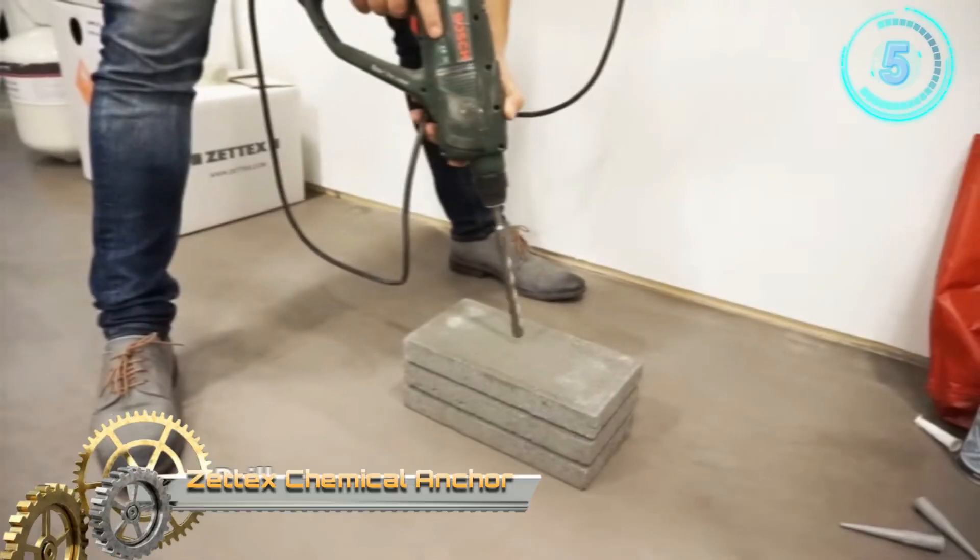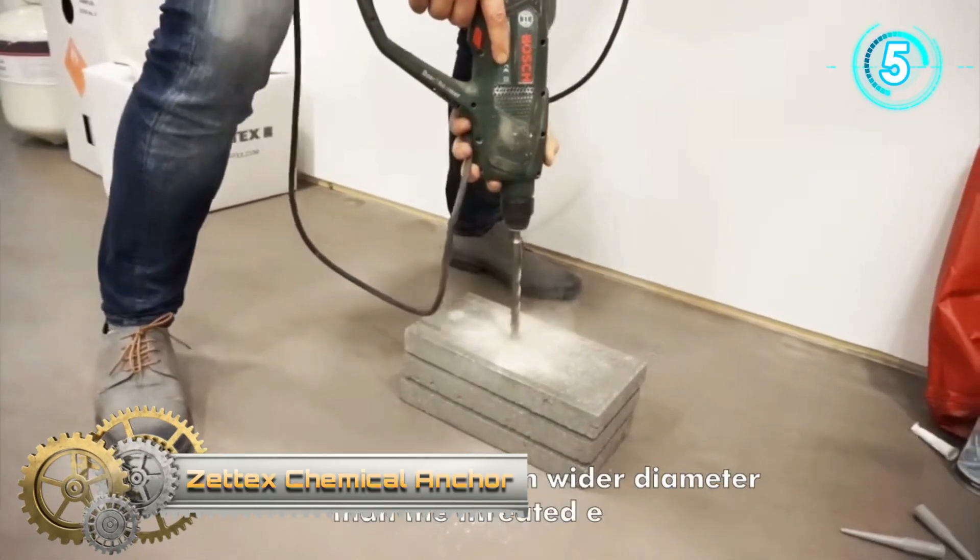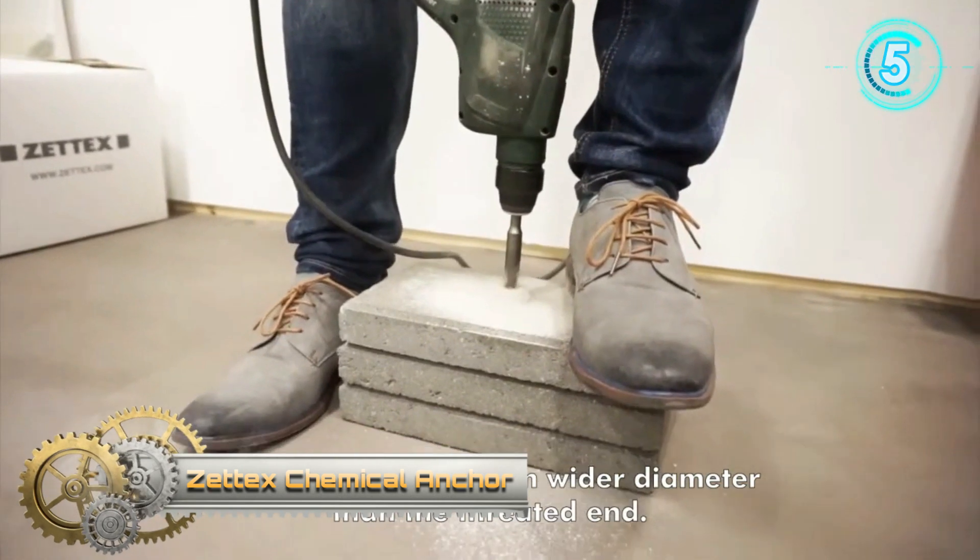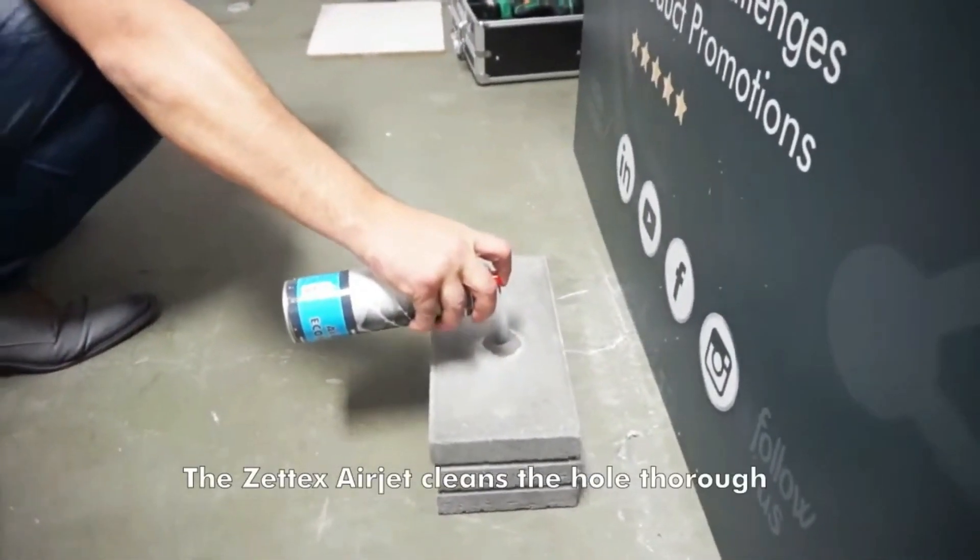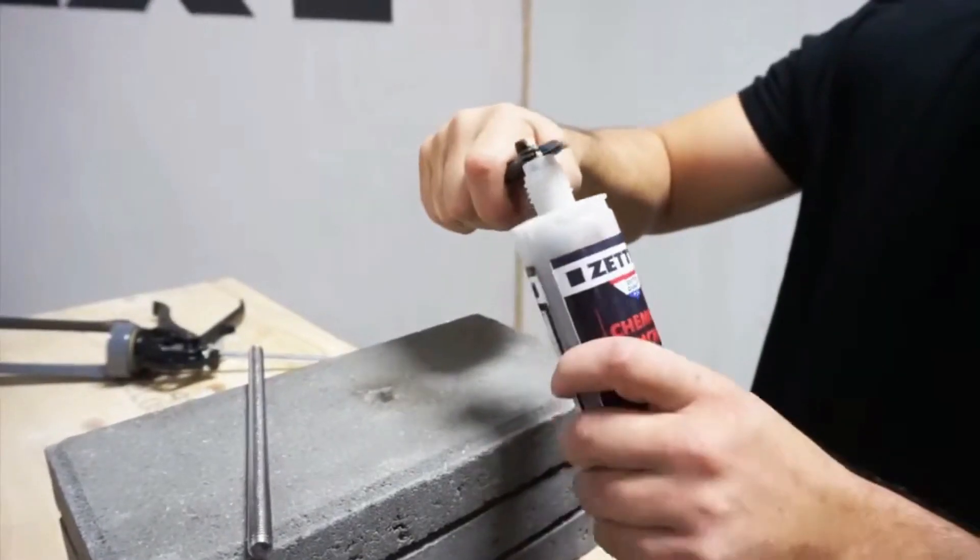Zedex chemical anchor for excellent anchoring. Zedex chemical anchor is a two-part chemical anchor. It ensures excellent anchoring of threaded rods, bolts, screws and such like in hollow and solid surfaces.